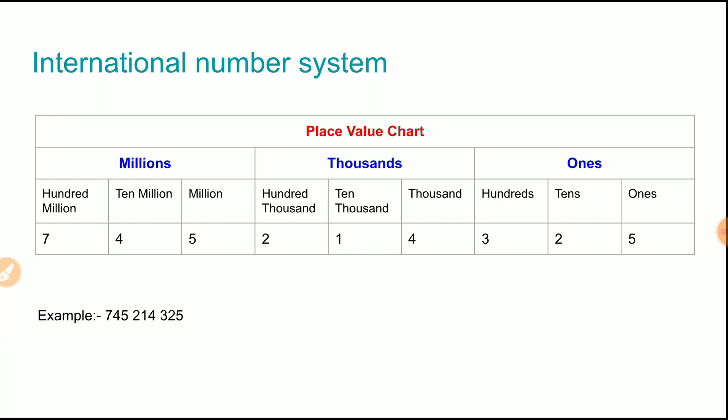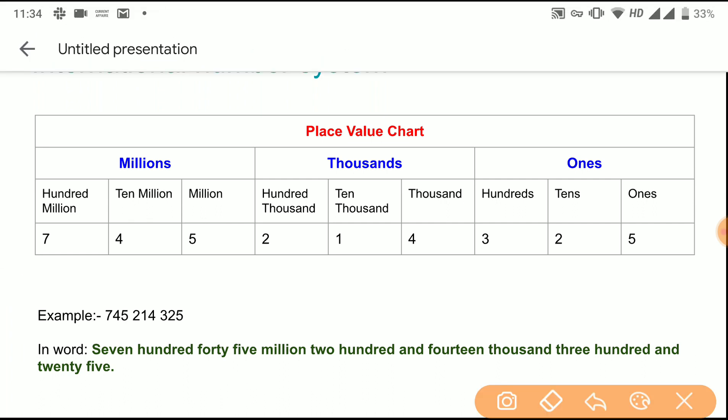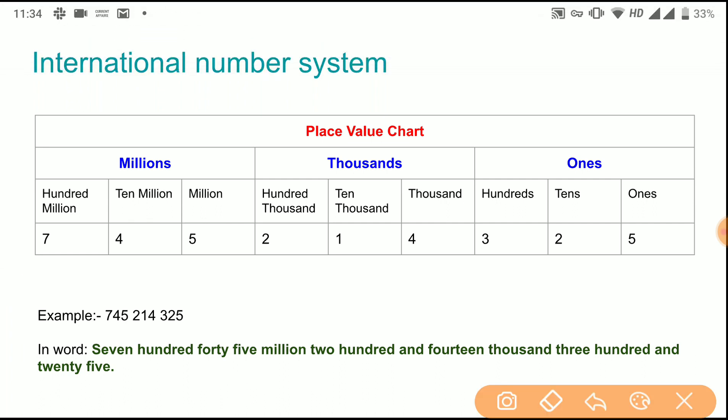325 ones. Let's see how we will write the number in words. In words: 745 million, 214 thousand,